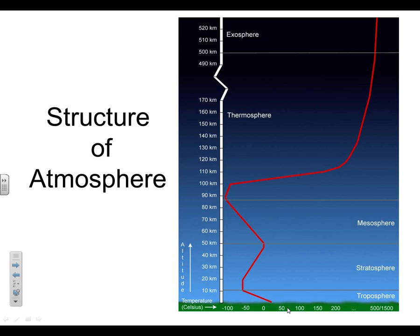The first thing is to look at the first sentence on your green note sheet about the structure of the atmosphere. It says the atmosphere is divided into four layers based on temperature. So we have four layers of the atmosphere based on temperature — go ahead and circle, underline, or highlight the word 'temperature.' That's why we have these four layers.